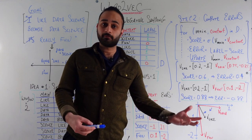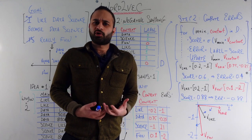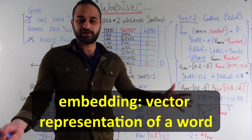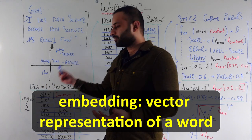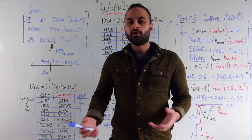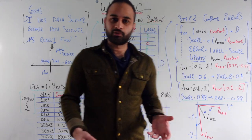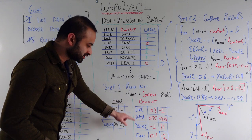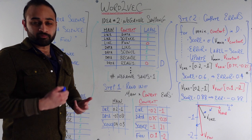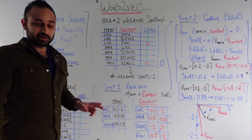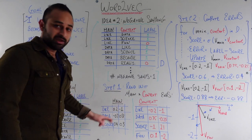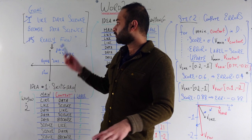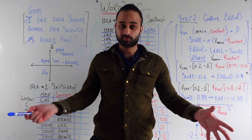Let's talk about how Word2Vec actually works now. The first big idea — and for me the most confusing part — is the fact that we actually have two sets of embeddings. By the way, an embedding is just a vector representation of a word; you'll see this word thrown around everywhere in NLP. The confusing part is that for each word, we don't just have one vector we're updating. We have two vectors for each word. The first is called the main embedding — those are the embeddings we're actually going to keep at the end of the day, and they're the answer to our question about projecting words into vector space.